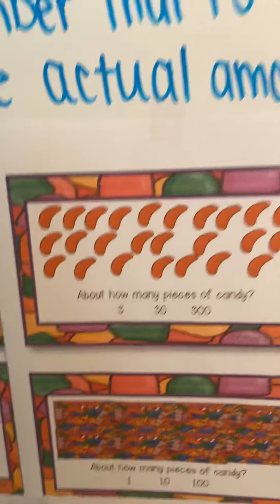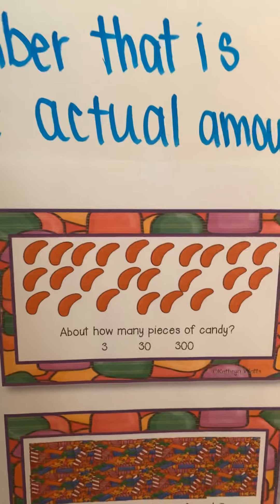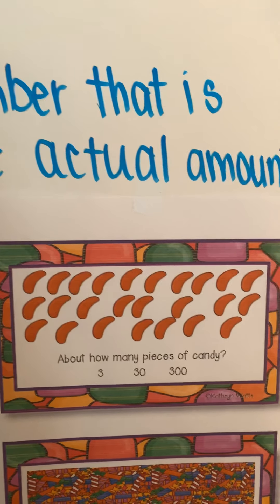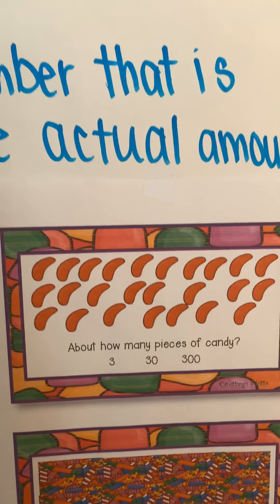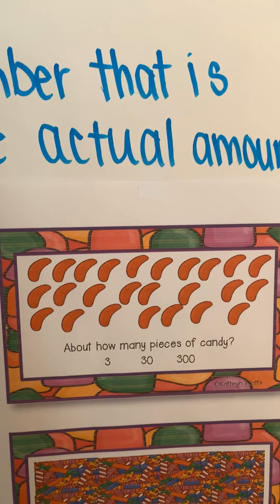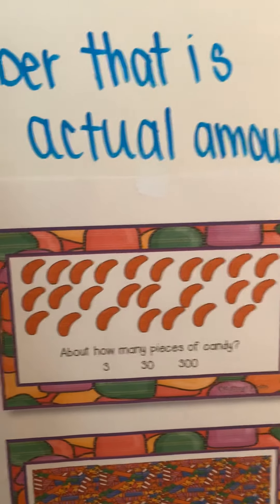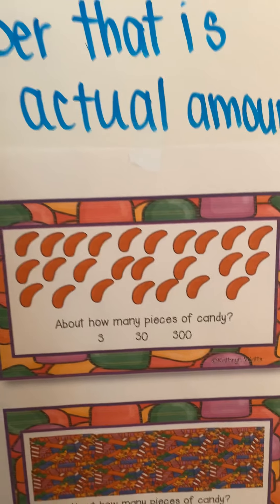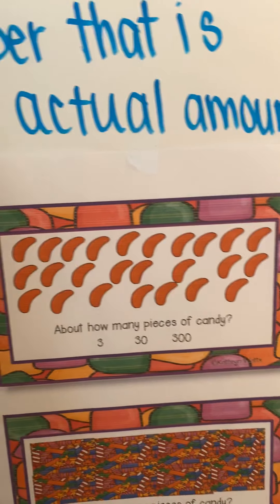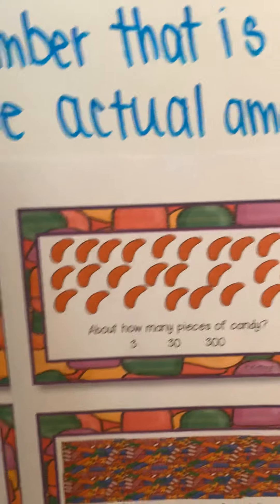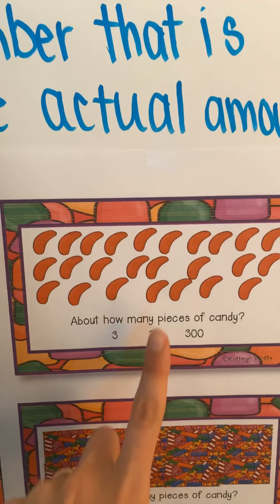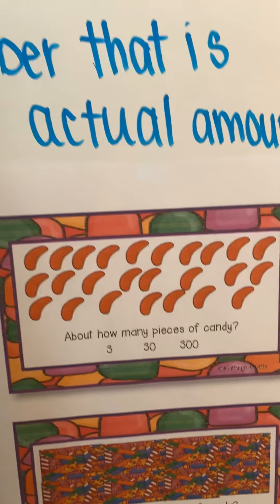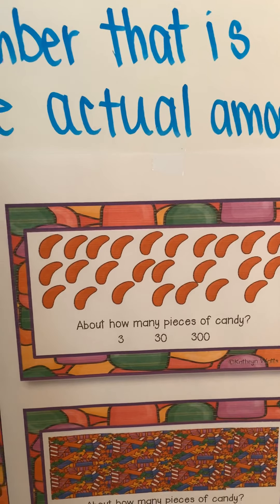Let's go up here and look at this one. About how many pieces of candy? Three, thirty, or three hundred? I see more than three — it's not close to three. No way there's three hundred. So my reasonable guess is going to be thirty. There are probably about thirty pieces of candy there.